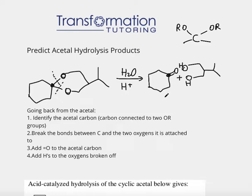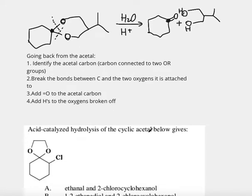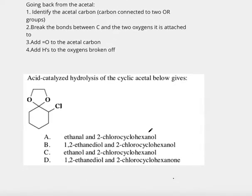Now let's go ahead and use the step-by-step mechanism—not mechanism, but a step-by-step trick, I should say—to do another problem so we can get some more practice. Here it says, acid-catalyzed hydrolysis of the cyclic acetal below gives what? So first, they told us that this is an acetal. Now we have to look for an acetal carbon.